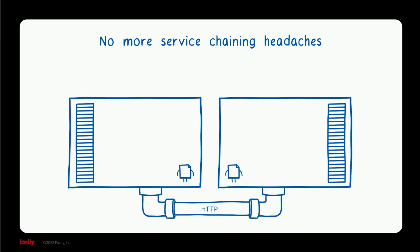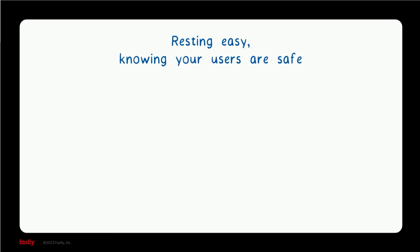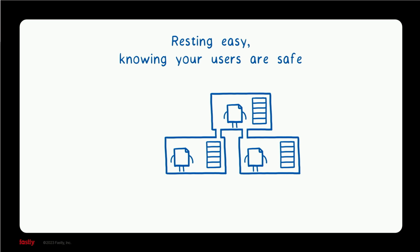It looks like no more service chaining headaches. Instead of service chaining multiple services together using HTTP, just use multiple components in one service. You get the isolation and language independence of different services, but the developer experience and performance of deploying a single application in a single service. It looks like sleeping easier at night, knowing that your application is protected — knowing that even if you have mistakenly deployed some malicious component or there's a zero-day exploit, that code can't get to the important security-critical parts of your application.